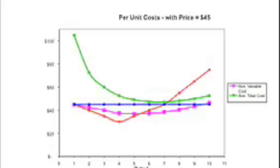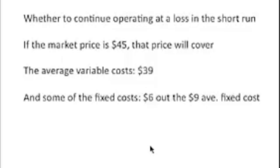If you read on the table on the front of the Excel spreadsheet handout, if you read on the table at seven, at a level of seven, the average variable costs are $39, and the average fixed cost is $9, for a total of $48, roughly.